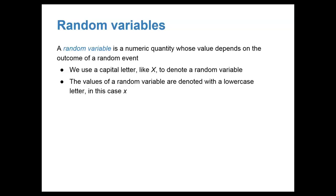The values of a random variable are often denoted with a lowercase letter, in this case the lowercase letter x. So for example, if I wanted to find the probability of a certain value occurring for a random variable, I would write that as P parentheses capital X to denote the random variable equal to the value lowercase x.